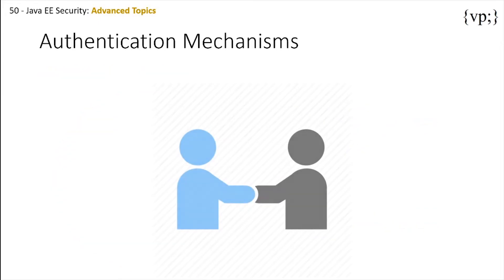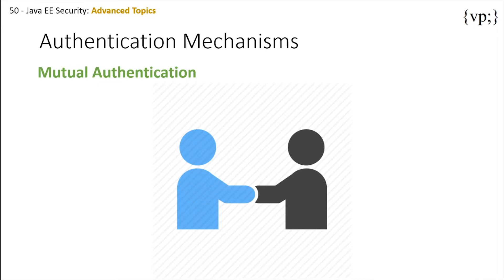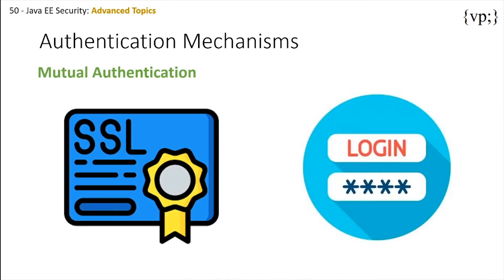Mutual authentication is more like when the client and the server check each other to verify that both of them are authentic. You can do this in one of two ways: either certificate-based or username-based authentication.